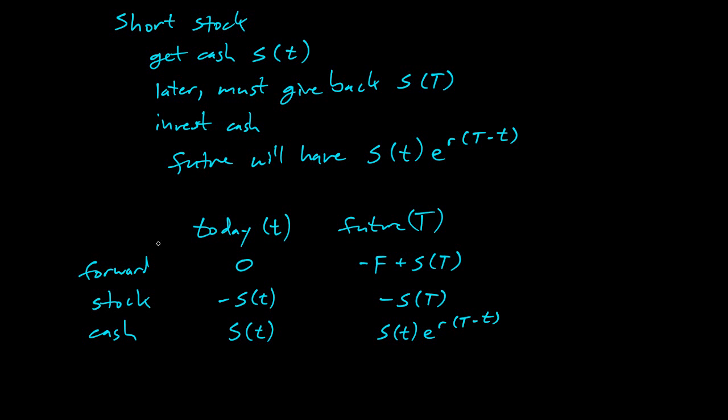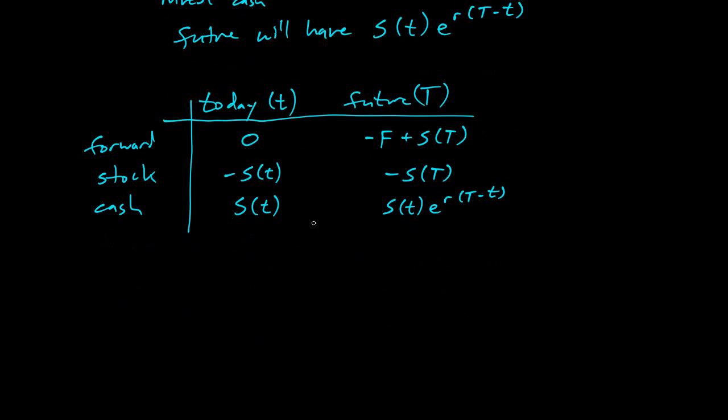All right, so what can this chart tell us? So if you look at today, it adds up to zero. I started with no money down, and I shorted the stock and invested the money, entered a contract here that didn't require any cash payments. I'm breaking even here. There's no money to start with. If I add up the future, you can see that my forward position covered my short position, and I still had to pay F, and I have money in the bank. So I have -F + S(t)e^r(T-t).